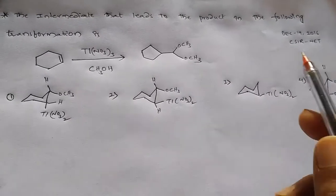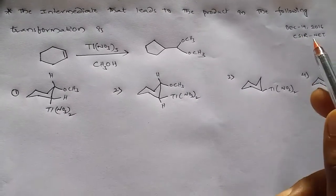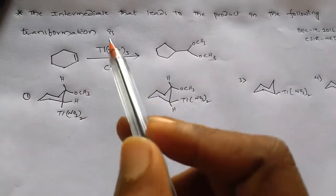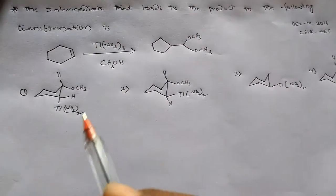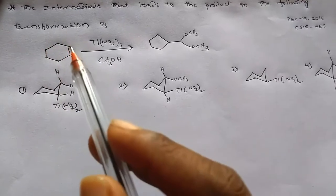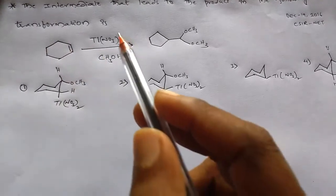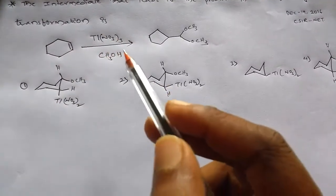Hi, this is Jalan JV. This question appeared on December 19, 2016 CSIR net. The question is about the intermediate that leads to the product in the following transformation. We have cyclohexene reacting with thallium nitrate and methanol.